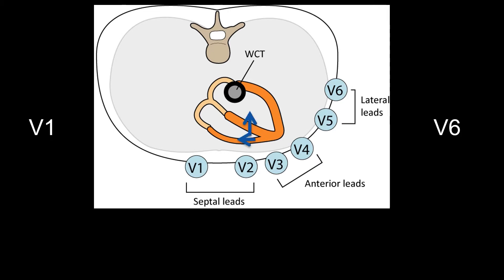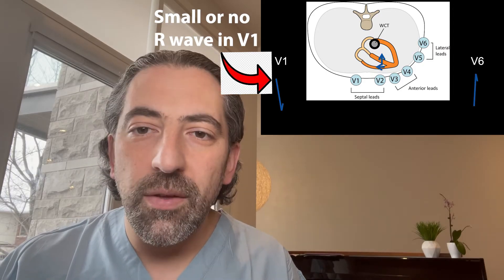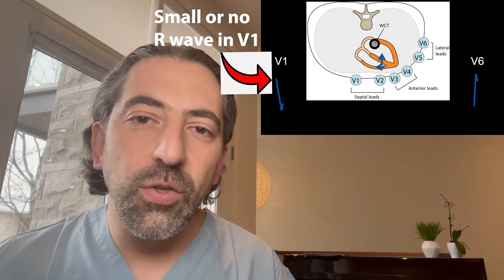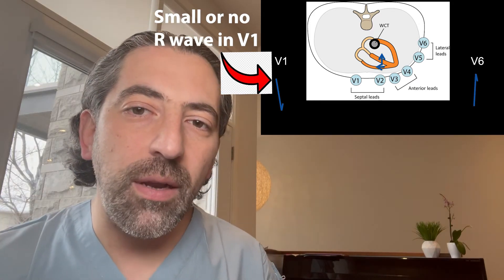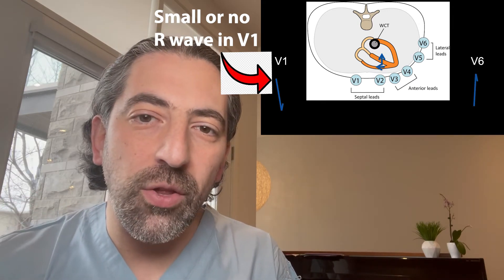This reduces the magnitude of the initial R wave in lead V1, and sometimes it's no longer seen and the initial deflection in V1 is negative right away, as the main vector of depolarization is right to left and V6 is positive right away. Because the left ventricular septum contains more muscle than the right ventricle, usually the R wave, if present, is very small in lead V1. So in left bundle branch block, even when there is an R wave, it's usually very small and is less than 20 milliseconds in duration.